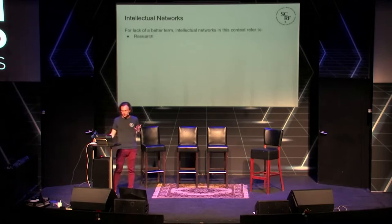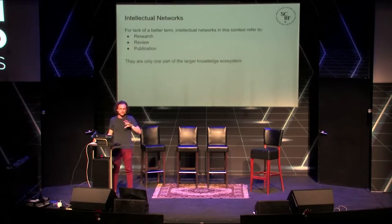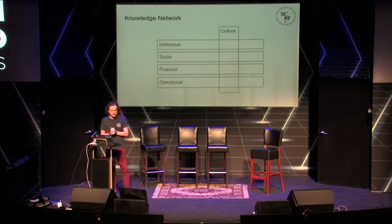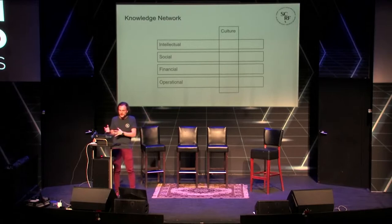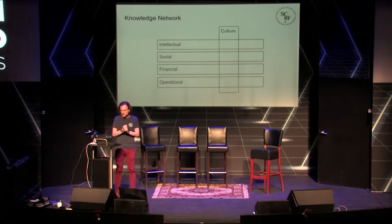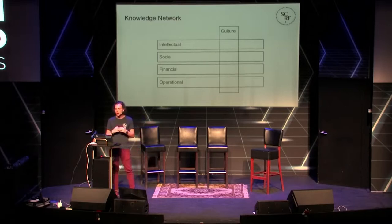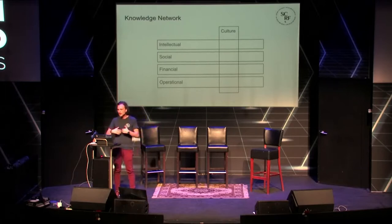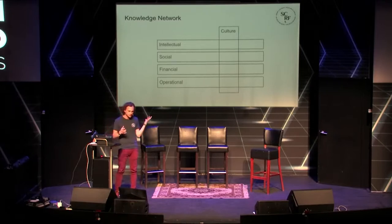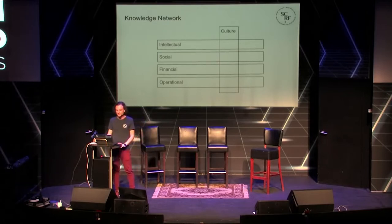These three networks — research, review, and publication — constitute what I'm dubbing intellectual networks, but they're only one aspect of a larger ecosystem. This is what I'm thinking of as the knowledge network stack: you need a set of intellectual networks, the people doing research, doing review and publication, but then you need the actual social network layer — how are we actually connecting and building community? How are we performing communications in terms of media and advocacy? How are we letting the world know about the research that's coming out? And how are we making sure people adopt this knowledge so it doesn't just live as PDFs in someone's virtual filing cabinet?